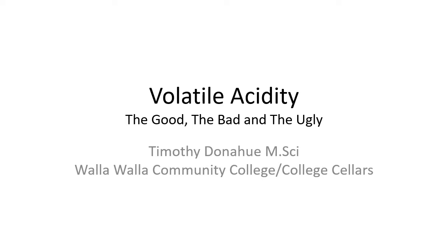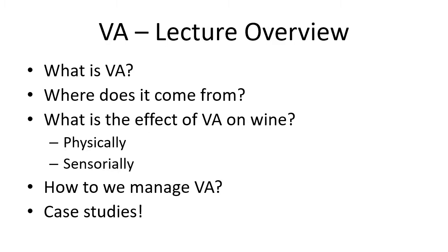Hello everybody, and welcome to another episode of Tim Rambles on About Wine. This is Volatile Acidity — what we want to talk about: the good, the bad, and the ugly, because it has good parts about it. There can be bad parts about it, and it can also be ugly. We want to talk about what is VA, what is Volatile Acidity, where does it come from, what creates it, what's the effect on wine, and then some physical and sensorial aspects. Then we're going to talk about managing VA from a hazard analysis critical control point standpoint.